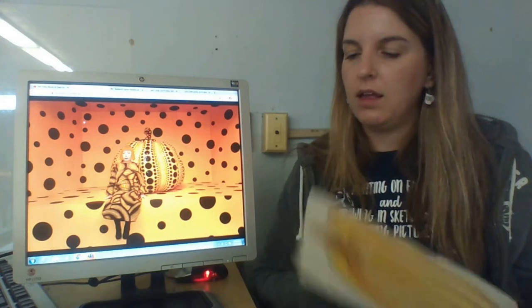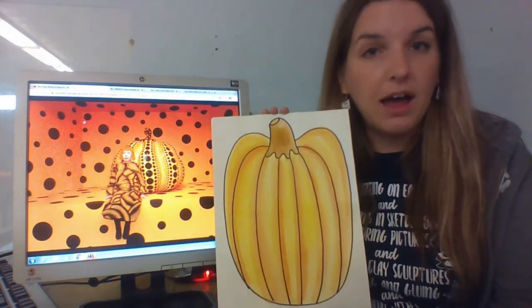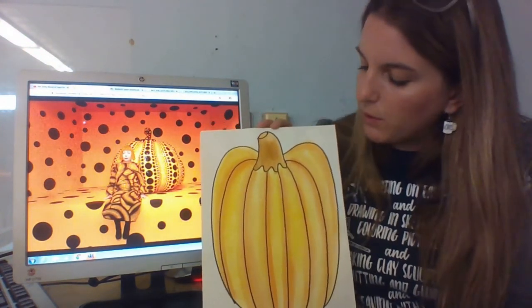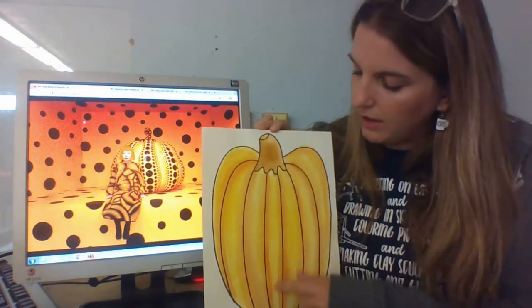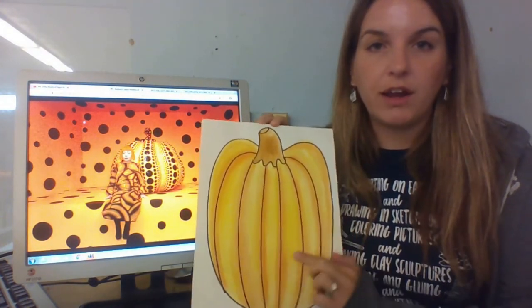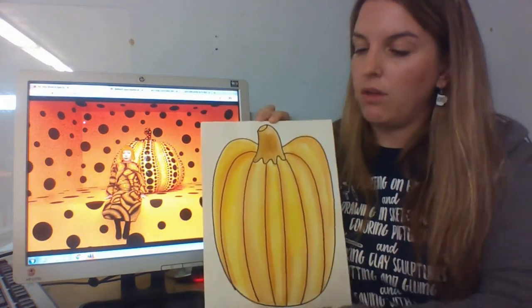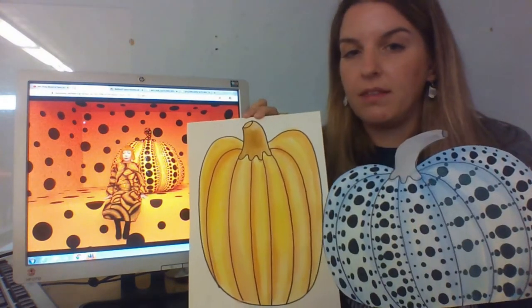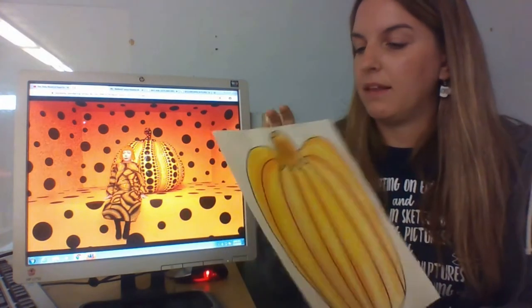This is a pumpkin that I painted that I have not added the dots onto yet, but you can already see that I used yellow and then a little bit of orange to show value, to show dark and light in the different spaces. And then I will also add, with a sharpie, the dots on top to complete the project.